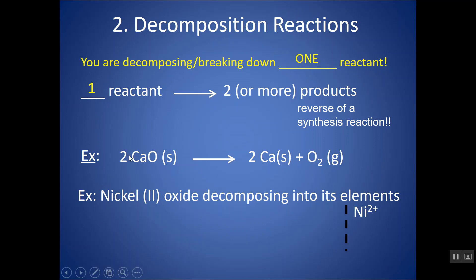Ni has a 2+ charge, as indicated by the Roman numeral. Oxide is oxygen with a 2- charge. Switch, and you get NiO because a 2 and a 2 simplify. And then, it decomposes into its elements. Ni is an element just written as Ni. Oxygen is diatomic, and then you just balance.